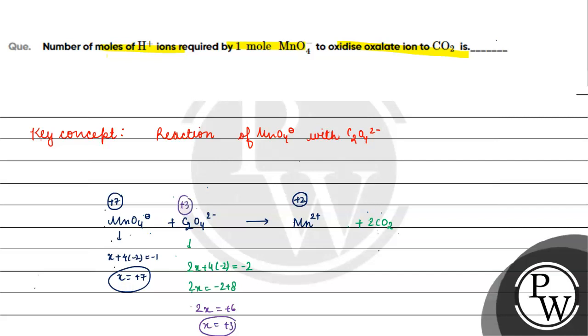In CO2, the carbon oxidation state is calculated as x + 2×(−2) = 0, giving x = +4. So carbon's oxidation state in CO2 is +4.